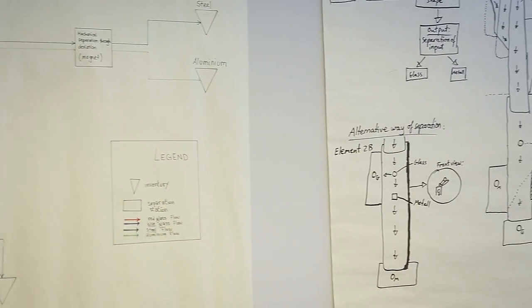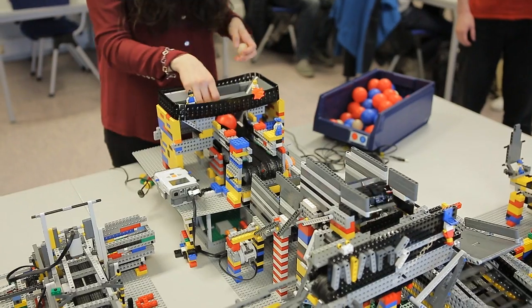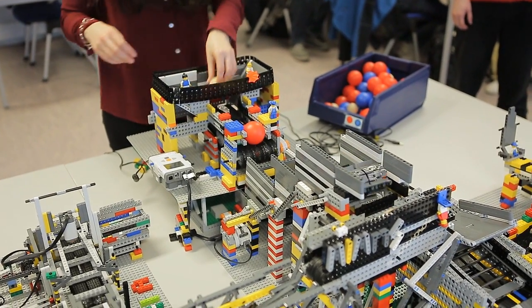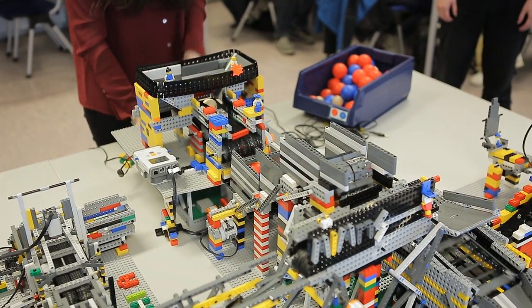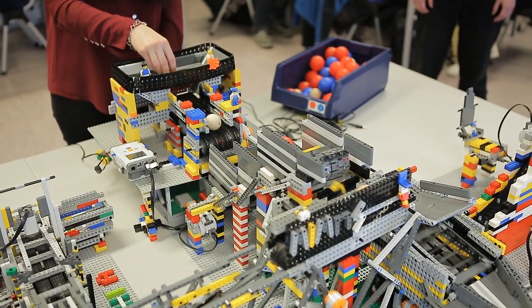This part sorts metal from glass and waste for incineration. Metal is represented by spheres, and glass and waste is represented by bricks. The sorting is done by gravity, so the balls roll to one side and the bricks are transported upwards by a conveyor belt.